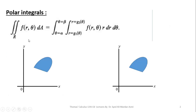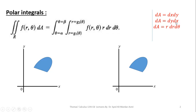This is a general representation of a polar integral: double integral over the region R of f(R, theta) dA. Please remember that the value of dA in the Cartesian coordinate system is dx dy or dy dx. But in polar coordinates, dA is equal to R dr dθ, and this order is fixed in polar coordinates. That is why in this formula the value of dA is R dr dθ.